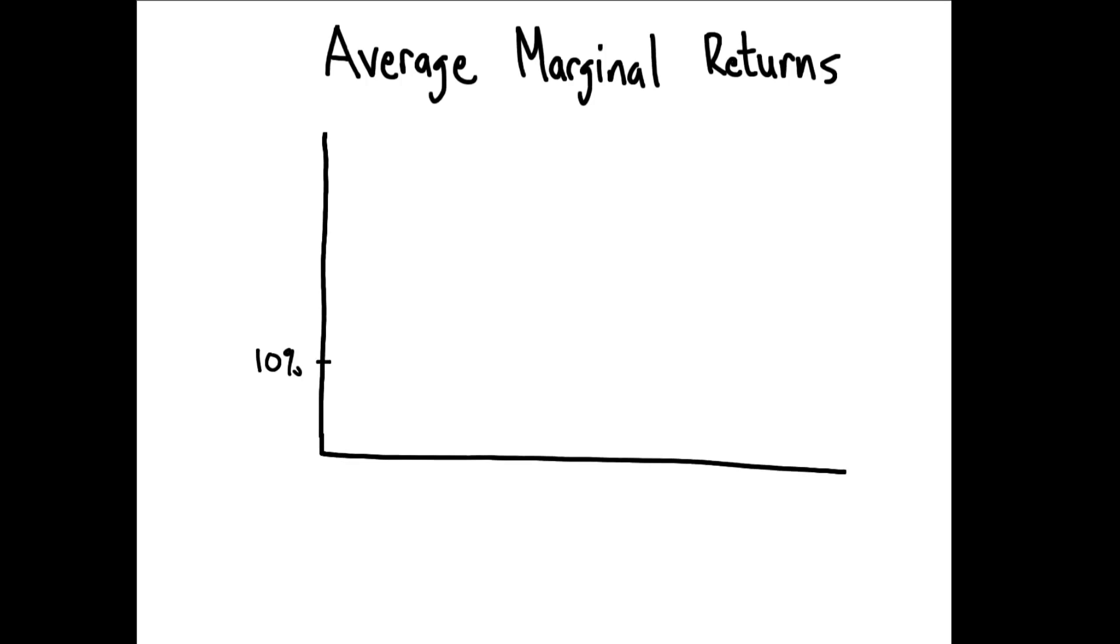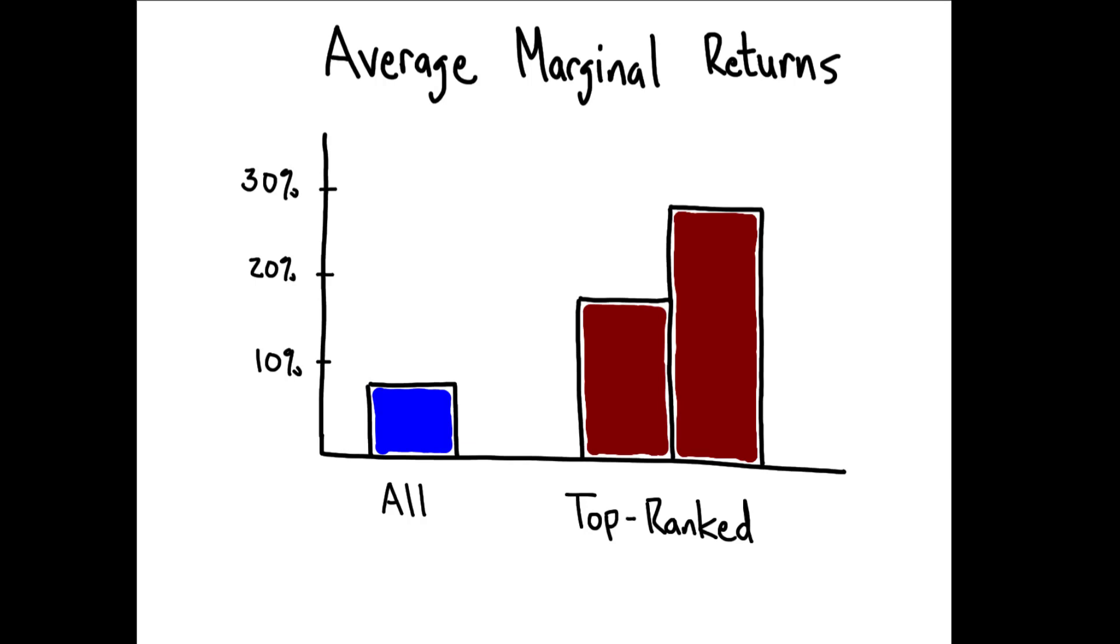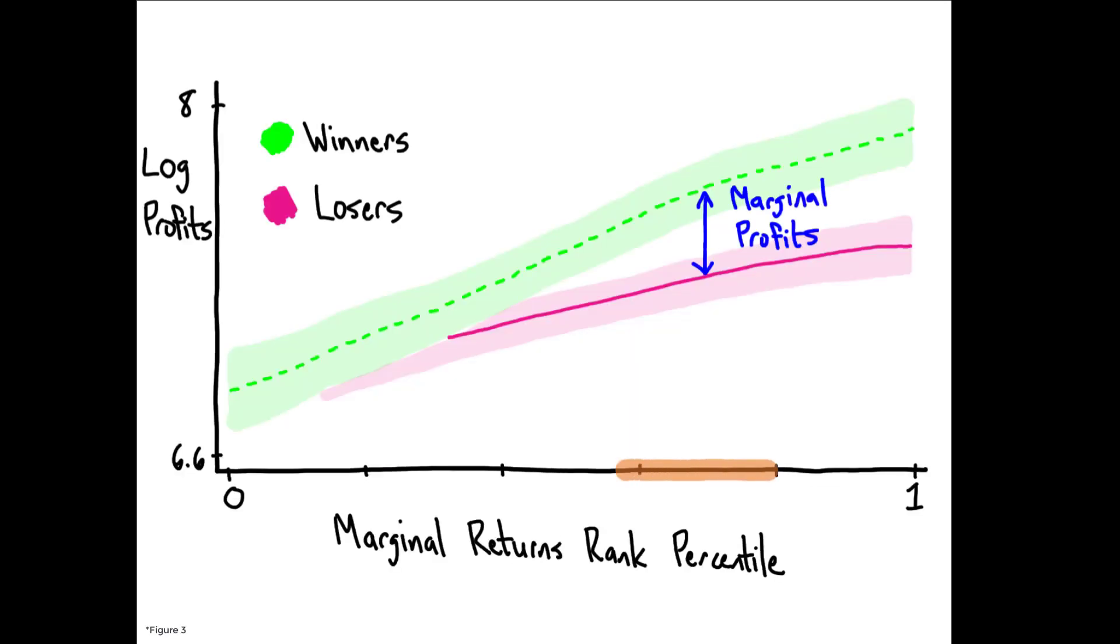In terms of magnitudes, while the average marginal return to the grant was about 8% per month, entrepreneurs ranked in the top third of the community earned monthly returns between 17 and 27%. A back of the envelope calculation suggests that had the researchers required entrepreneurs to repay their grant with a 26% APR, which is the regulatory cap on interest rates in India, all entrepreneurs above the 58th percentile of the rank's distribution would have earned a net positive return on their investment.